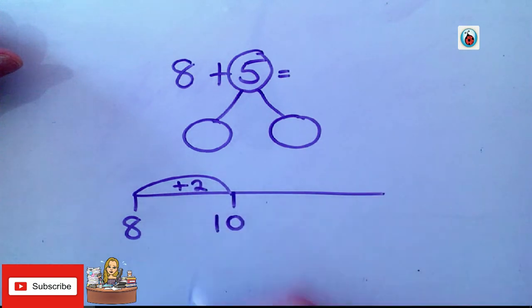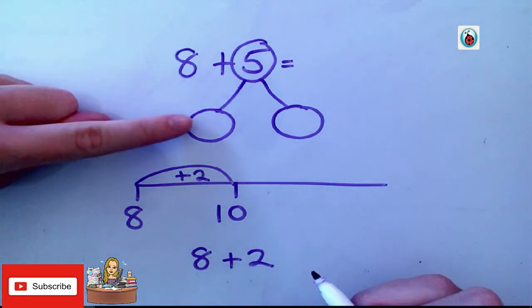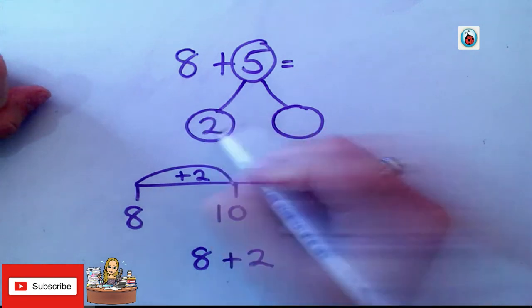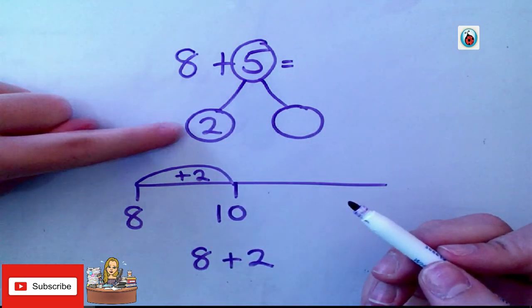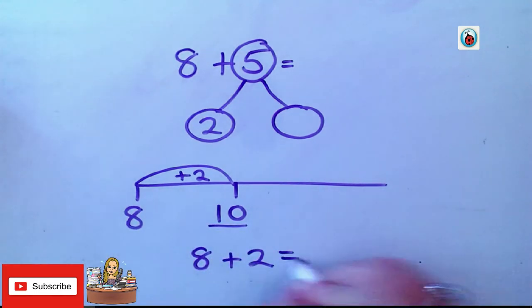My first calculation, I've done 8 add 2. So, this first number that I've partitioned 5 from is 2. So, I've done 8 add 2 is 10. So, I've made 10.